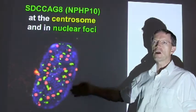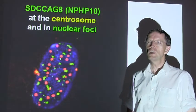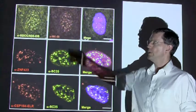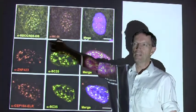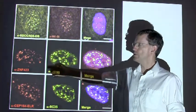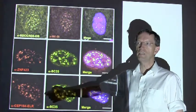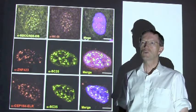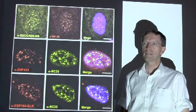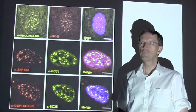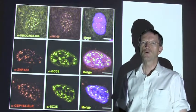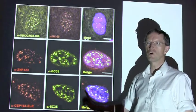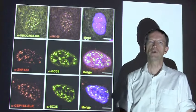In our current paper, we identified mutations in additional genes: in addition to SDCC-AG8, the genes ZNF423 and CEP164. We found that they are also causing renal-retinal ciliopathies if mutated. And again, we observed dual localization of ciliopathy proteins, both at centrosomes as well as in nuclear foci.